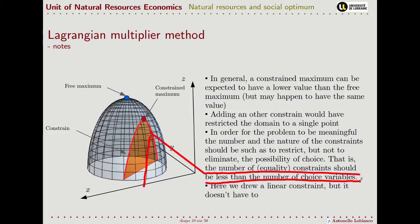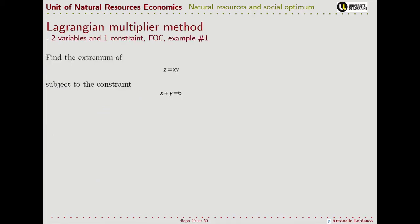Another important thing is that I used linear constraints here because they are simpler to draw, but as with the objective functions, the constraints do not need to be linear in nature. So let's try a numerical example. Here we have to find the extremum of the function ζ = xy, subject to the constraint that x plus y must equal 6.